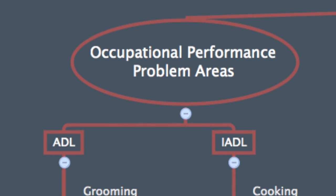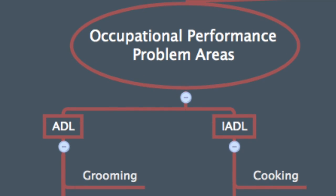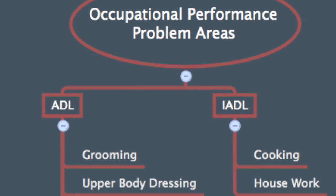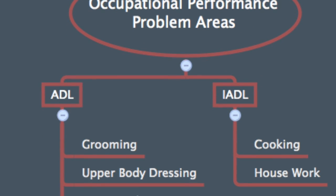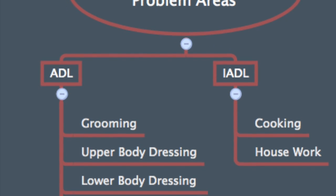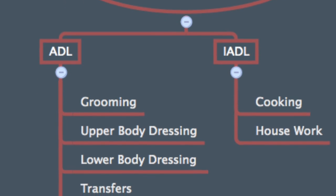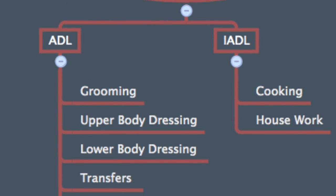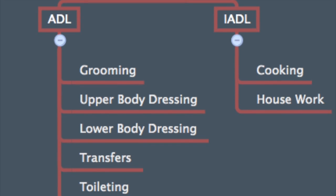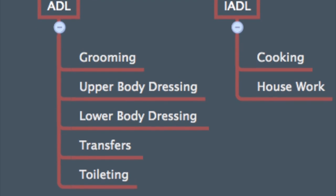Sophia's areas of occupational performance that are of concern in this setting are her ADLs, including grooming, upper and lower body dressing, transfers, and toileting, and a few IADLs such as cooking and housework, to better prepare her for returning home.